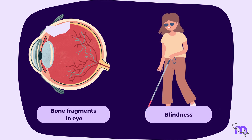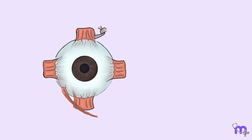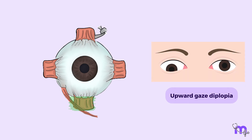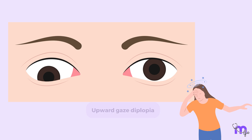Now let's talk about fractures of the floor. In these cases, the fracture line often involves the inferior rectus muscle, resulting in upward gaze diplopia. This condition leaves the affected eye unable to move upwards, causing double vision when attempting to gaze upwards.